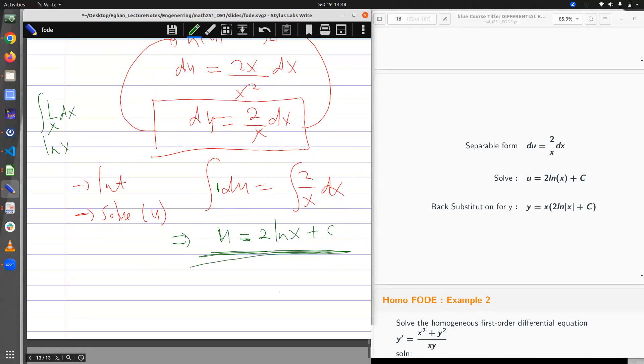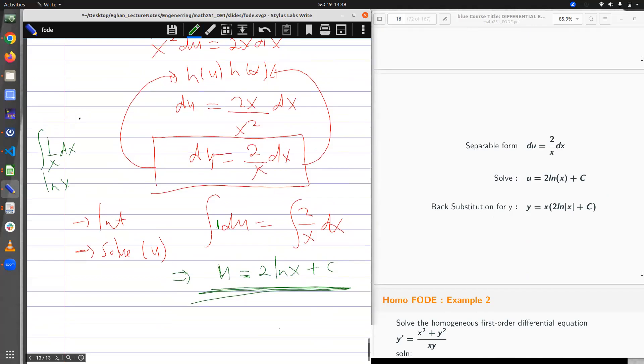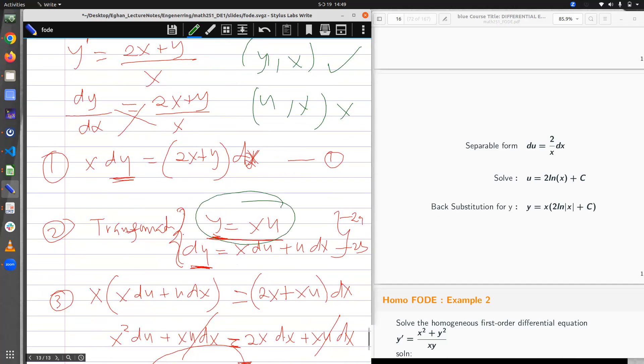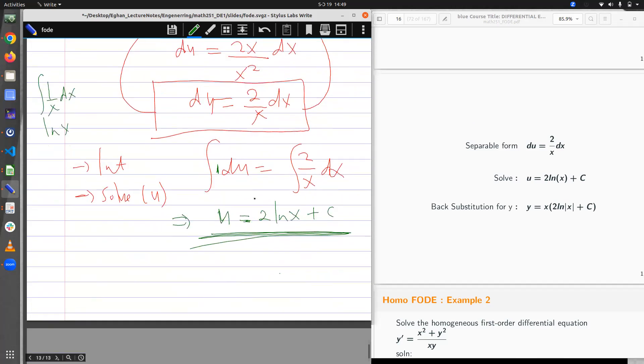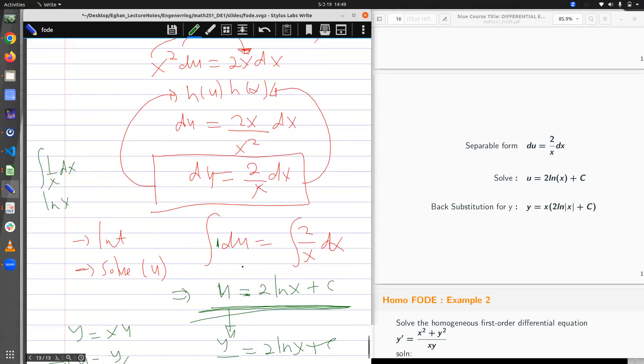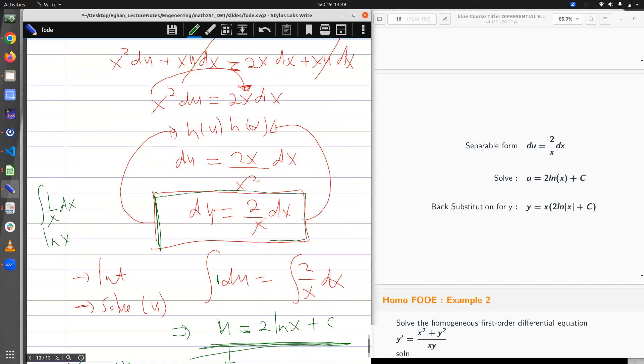Now this is not my answer. You know why? Because the original problem was given in terms of y and then x. It is not u and x. It is y and x. It means that from here I have to do a change of subject. Y was given as x u. It implies u is equal to y over x. So I do a substitution here. y over x is equal to 2 ln x plus c and y will be equal to x into bracket 2 ln x plus c. This is my solution. So always ensure it is the same variable before you go ahead and then solve for the unknown.